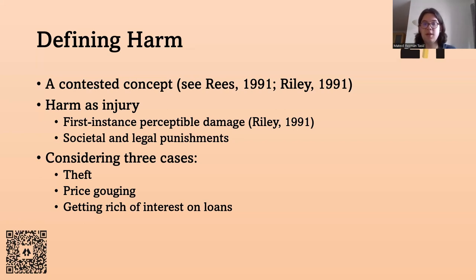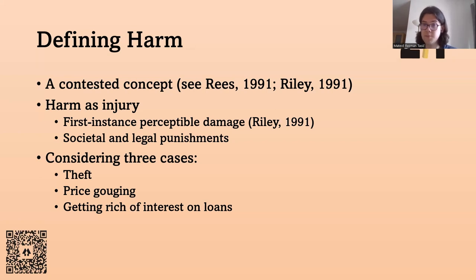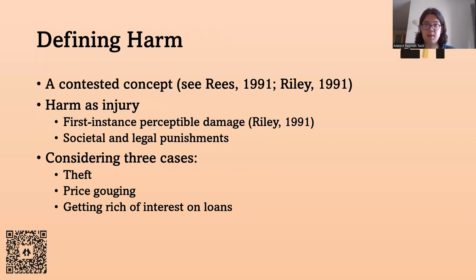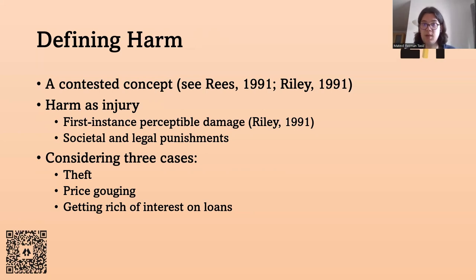The third case is getting rich off interest on loans. Someone gives you a loan with 10% interest, you have to pay for quite a while, and it's quite high interest. But for Mill, this is not a problem because there is no first instance perceptible damage. Someone loaned you money — they helped you, gave you money you didn't have at the moment you needed it, and they're getting interest because they took a risk. This is why we cannot really talk about harm here. People might frown on it, Mill says, but you cannot stigmatize or punish someone for that because they didn't do any harm — there was no first instance perceptible damage.